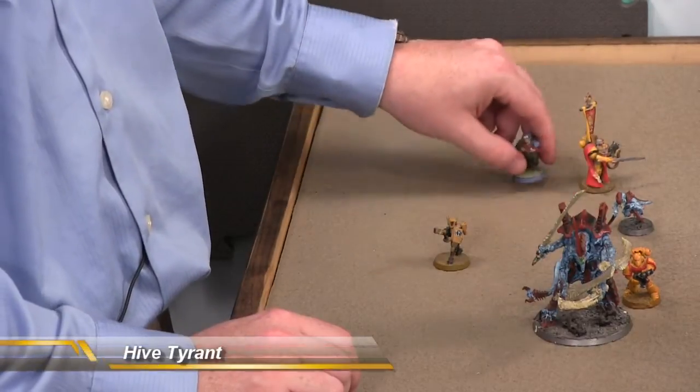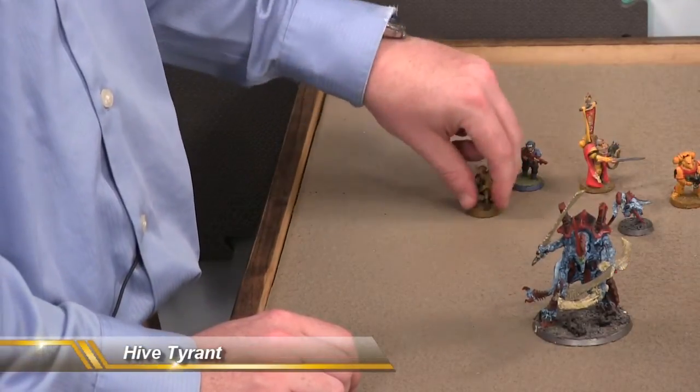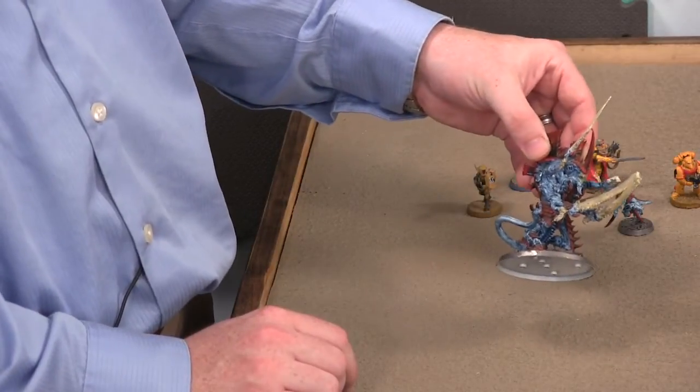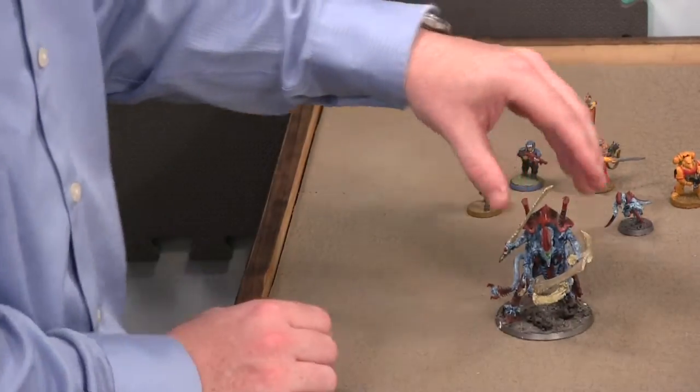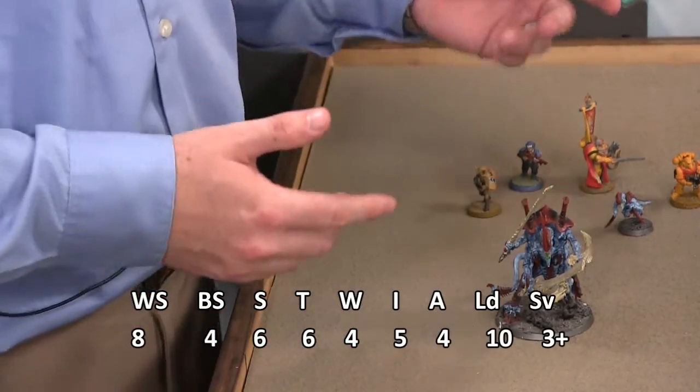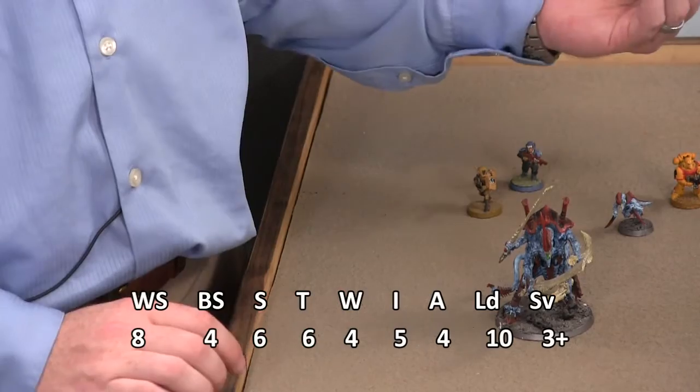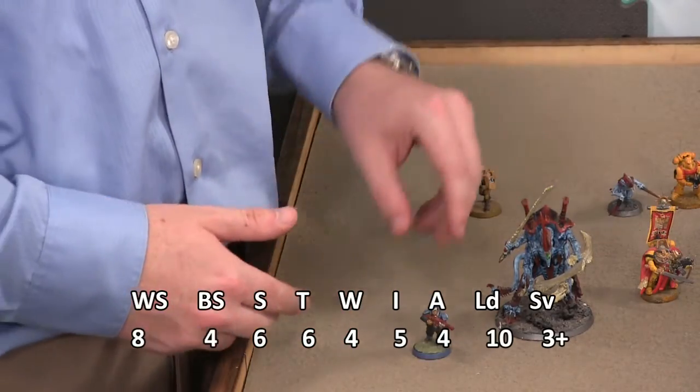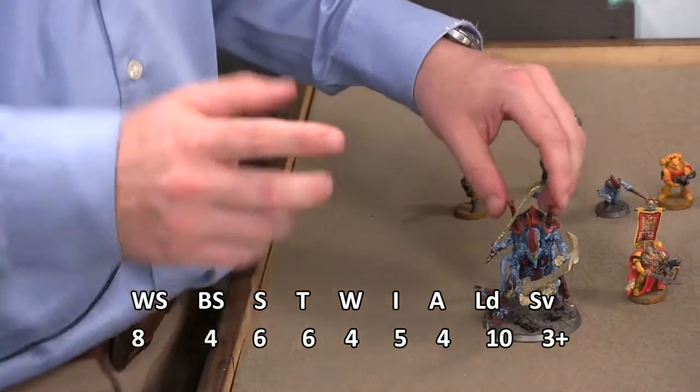Big head honcho here. This is a hive tyrant that I've modified. As you'll notice, it's my little bit of a count-as Swamp Lord. But I'm just going to go over the hive tyrant stats for right now. Now let's take a look at those stats. Big difference there. So he's much higher than a space marine. He's higher even than the space marine captain. He's double a lot of stats than the imperial guardsmen. So he's a big head honcho.